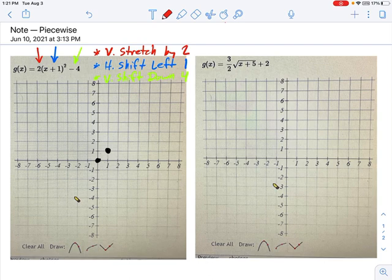So, first, you stretch the 0, 0 point. Nothing happens. Then, you shift it left by 1. Here we go. Then, you shift it down by 4. There we go. That's our new location of the vertex of a parabola.